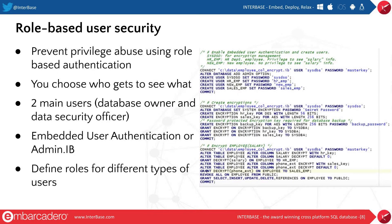In general, security for InterBase relies on a central security database for each server host. This database, called admin.ib by default, contains a record for each legitimate user who has permission to connect to the databases and InterBase services on that host server. Each record includes the user's login name and the associated encrypted password. The entries in this security database apply to all databases on that server.